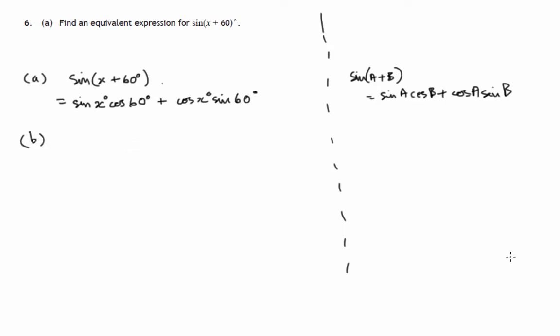Part (b), let's have a look at that. Hence, therefore, they're expecting us to use this result we've just written down. Hence or otherwise, determine the exact value of sin(105°). So how do we use this to get 105 degrees?